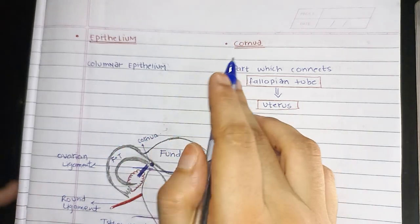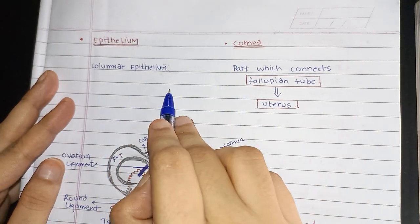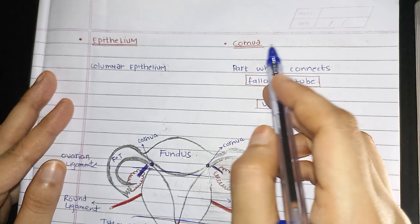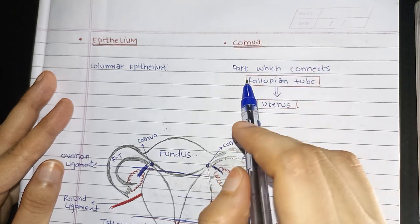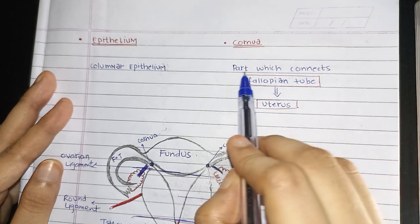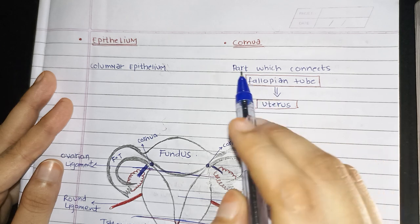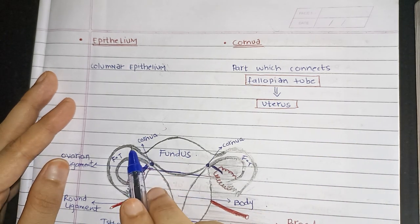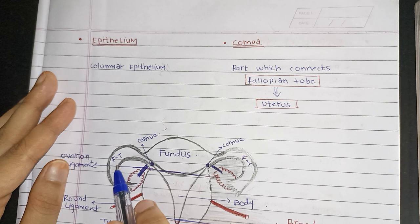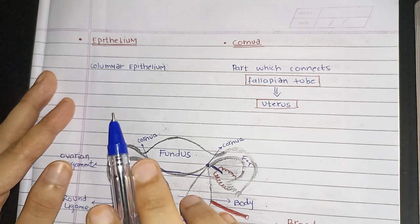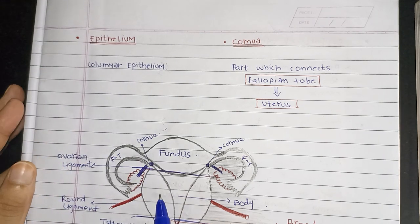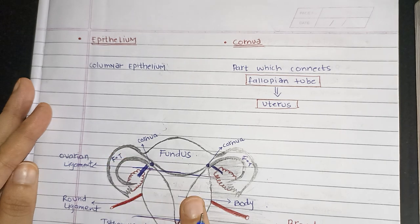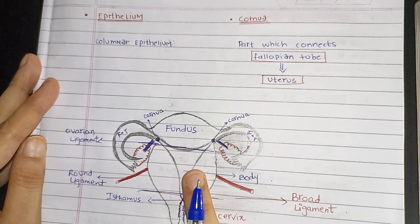The uterus is lined by columnar epithelium. The cornu is the part which connects the fallopian tube to the uterus — this is the fallopian tube, and the cornu is the part which connects the fallopian tube to the uterus.